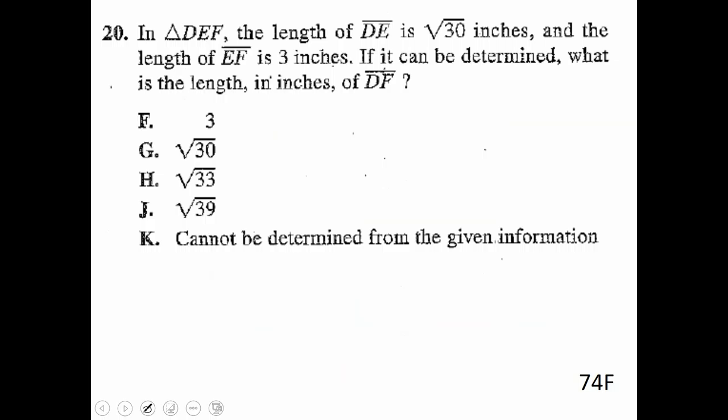All right. This question here says triangle DEF. The length of DE is the square root of 30. And the length of EF is 3. If it can be determined, what is the length in inches of DF? So I include this question in Pythagorean Theorem because oftentimes students will read this and they'll immediately draw a right triangle because we've got two sides. They'll label this DEF. And they'll say DE is the square root of 30. They'll say EF is 3, some combination of this. And they start trying to use Pythagorean Theorem. And if you go through here and if you use Pythagorean Theorem, you're going to get J. It's going to give you the square root of 39 as an answer choice.